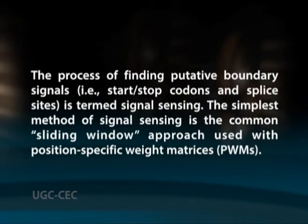The process of finding putative boundary signals — that is, start or stop codons and splice sites — is termed signal sensing. The simplest method of signal sensing is the sliding window approach used with position-specific weight matrices (PWMs). A PWM consists of positions each having a distribution over nucleotides which can occur at that position. Since this PWM is intended for finding donor splice sites, the 4th and 5th positions accept only G and T respectively. The other positions are nucleotide distributions which reflect compositional biases at corresponding positions flanking true donor sites in the organism of interest.